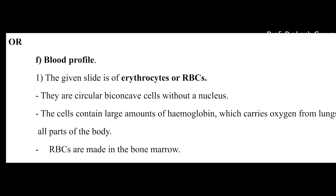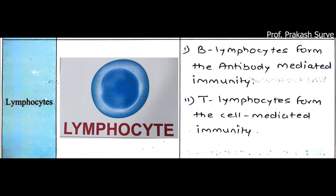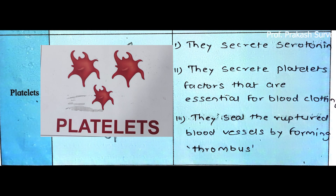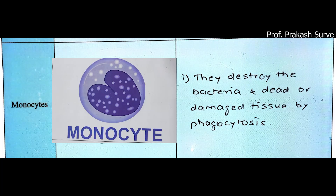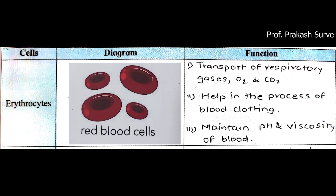Next may be a blood profile, in which different types of blood cells may appear — such as basophil, the label is not there and you have to identify the diagram. Lymphocyte — only the diagram will be there. Neutrophils — in some cases it may be there in the slide also. Platelets, monocytes, eosinophils, and RBCs that is erythrocytes. You have to identify these particular cells and write one or two functions of each.